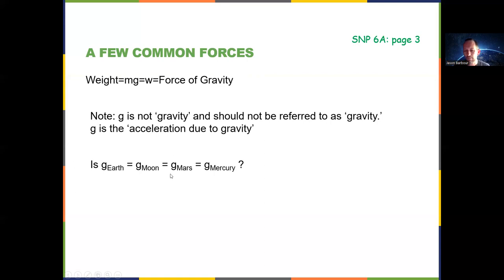Is the acceleration due to gravity the same everywhere? No. It's constant on Earth as long as you're reasonably close to the surface — we're not talking about appreciable altitude. But there's a different acceleration due to gravity on the moon (about 1.67 meters per second squared) and a different one on every other planet. You'll either be given it in a problem or asked to calculate it.